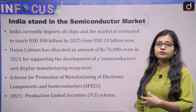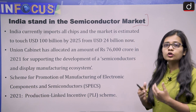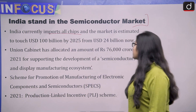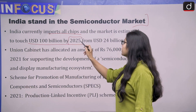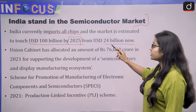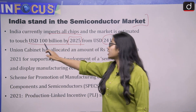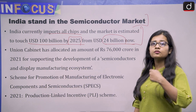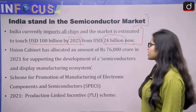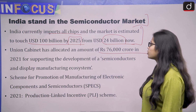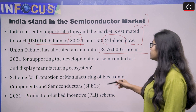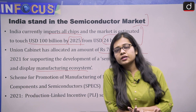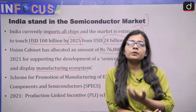Regarding India's stand in the semiconductor market: India currently imports all chips, and the market is estimated to touch USD 100 billion by 2025, up from $24 billion now. This shows the enormous potential of the semiconductor industry. The Union Cabinet has allocated ₹76,000 crore in 2021 for supporting the development of a semiconductor and display manufacturing ecosystem, showing the government is trying its best to support semiconductor manufacturing.